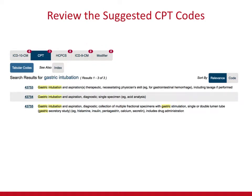Look what comes up. This is very handy, because there are only three codes from which you have to choose to report this procedure. No matter whether there's one, three, or thirty, you need to read each code description carefully and take a look at what is different between these codes. The first thing you'll note is they all start with the same four words: gastric intubation and aspiration. But the next word is different between these three choices.